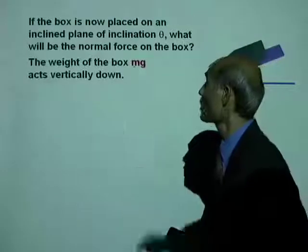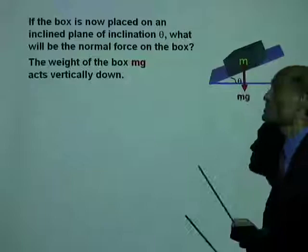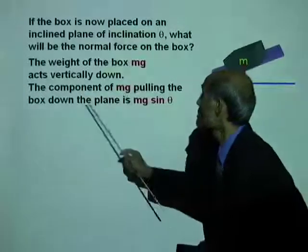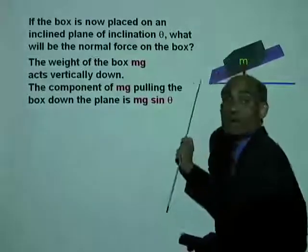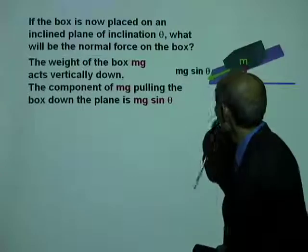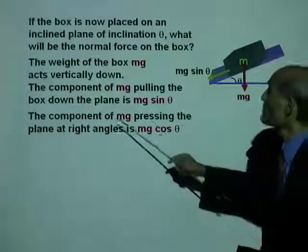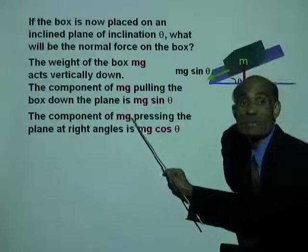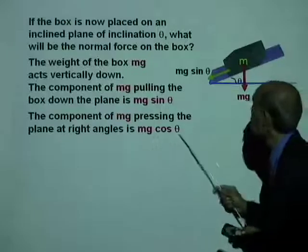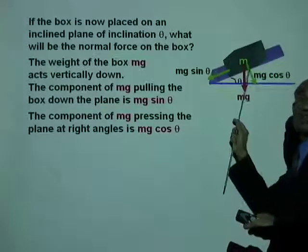The weight of the box, mg, acts vertically down. That is mg. And the component of mg pulling the box down the plane is mg sine theta. mg sine theta pulls the box down the plane.